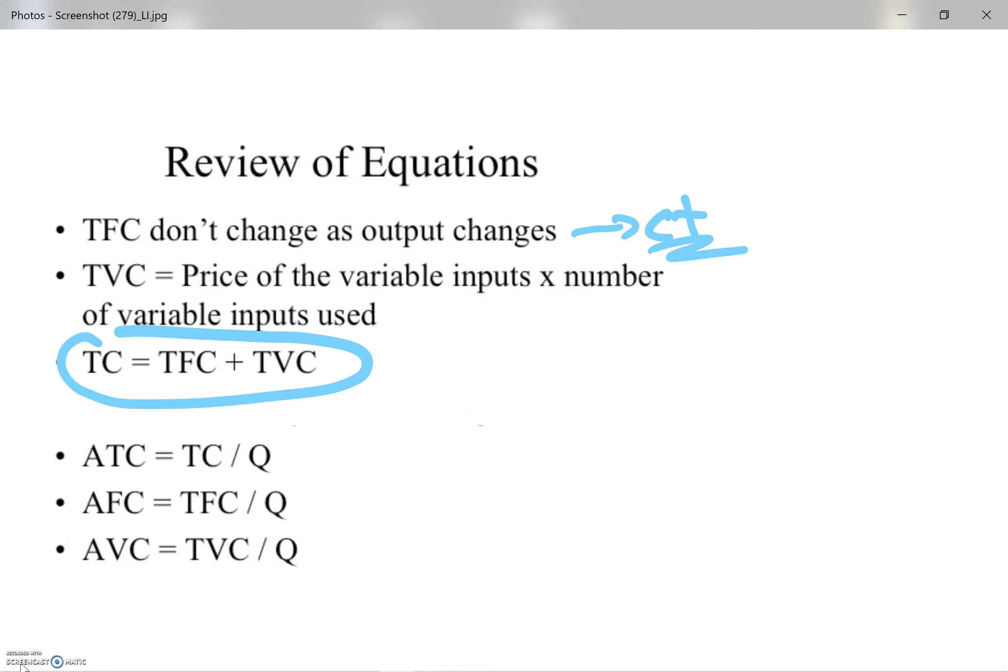And then we have total cost, which is both fixed and variable. And these are the averages. Now mainly in your book, what you are responsible for is the average total cost. And as we said before, we care about it being at its minimum. So here we have average cost and here we have quantity, and this is the optimum point.